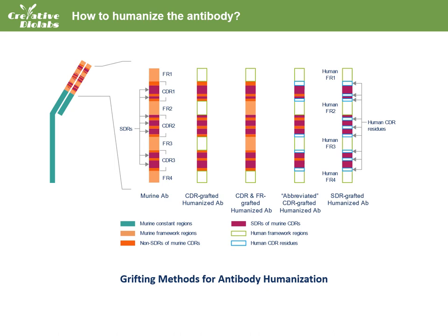The framework regions, or FRs, can also be optionally cloned together with the CDRs into the corresponding regions of human antibody to maintain the correct conformation of the variable regions of mouse antibody. Cloning the mouse antibody CDRs and FRs partially into the human antibody can produce an abbreviated CDR-grafted antibody.